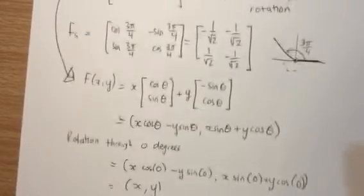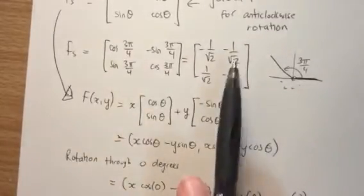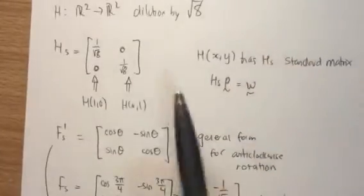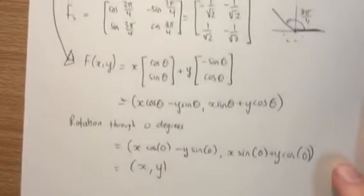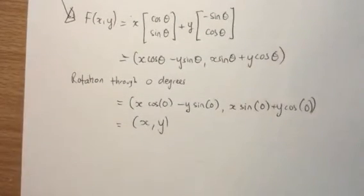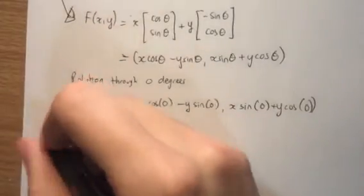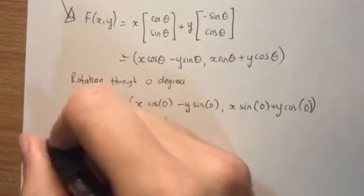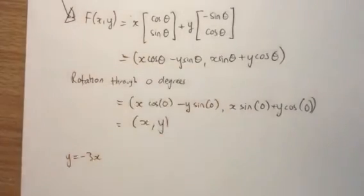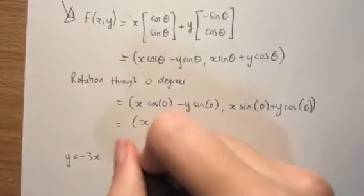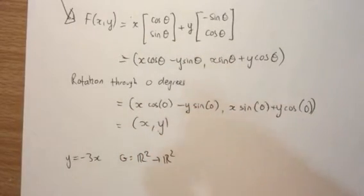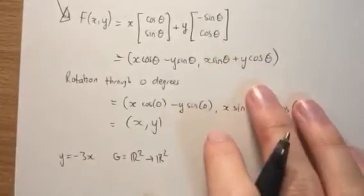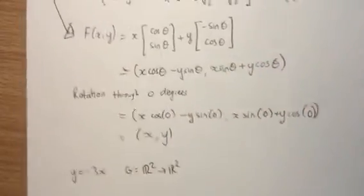So we have found two of our standard matrices: F_s for rotation, and H_s for dilation. Now let's do the tricky one — the orthogonal projection onto a line. The line we want to orthogonally project onto is y = −3x.